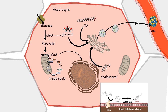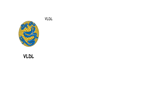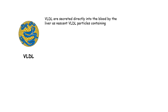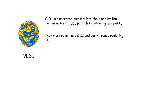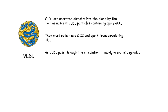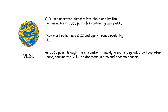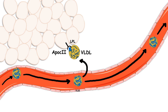The apolipoprotein B100-containing VLDL particles are released into the bloodstream. VLDL then encounters HDL, and from HDL it obtains other apolipoproteins such as apolipoprotein C2 and apolipoprotein E — so it is very important that VLDL interacts with circulating HDL. As VLDL passes through circulation, it also encounters adipose tissues, where lipoprotein lipase breaks down triglyceride, just as we saw with chylomicron.